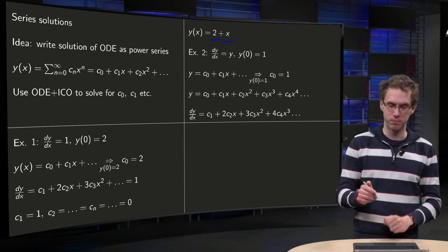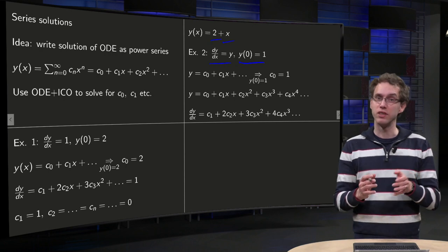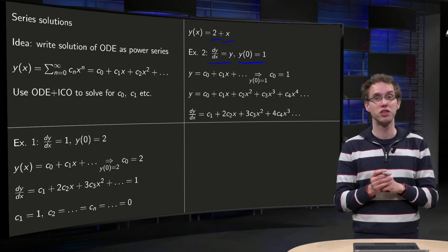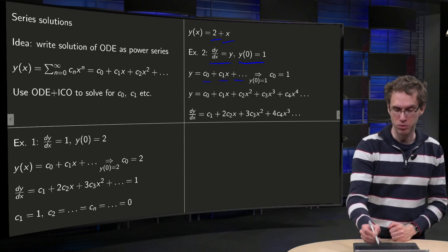Second example, y' equals y, and y(0) equals 1. Again, we see we have an initial condition at x equals 0, so we make a power series around x equals 0, c0 plus c1x plus c2x squared, etc.